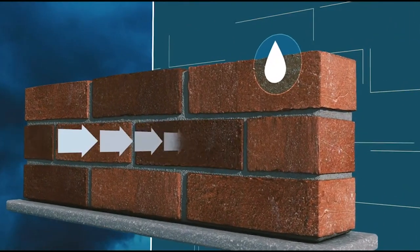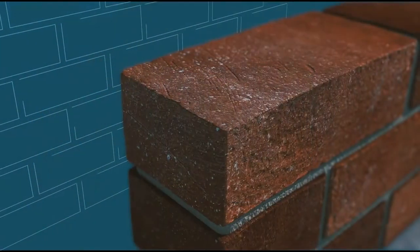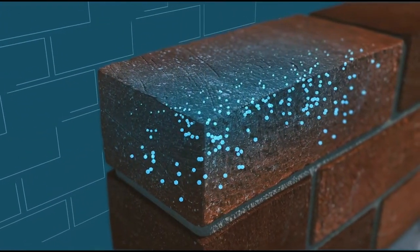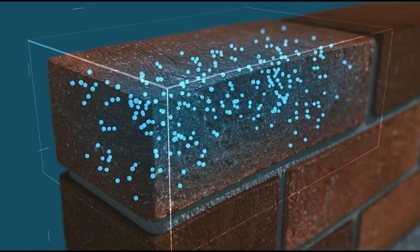Efflorescence, like a silent infiltrator, emerges when water seeps into the concrete or other building surfaces. The water carries alkali from within the material to the surface where it meets carbon dioxide from the air.